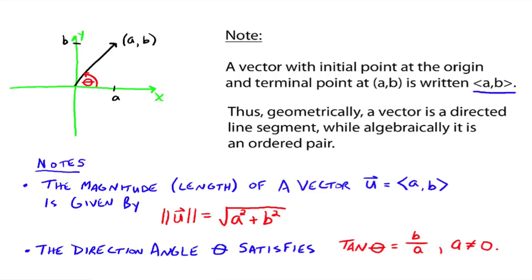The magnitude or the length of a vector U. So let's call this up here, let's call this U. If that's vector U, then the magnitude or length of a vector U, which is equal to AB, is given by the magnitude of U equals the square root of A squared plus B squared. Everybody see that? If you want this length right here, well, this is just a right triangle. If you draw it down, make a little right triangle, then Pythagorean theorem.